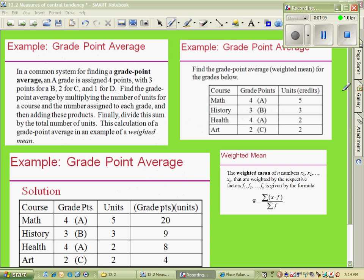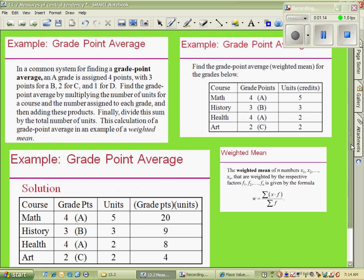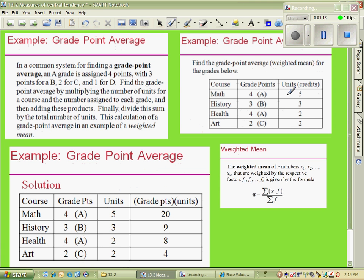They've created a nice table for us. We see here that if you get an A in this particular class, it's 4 points, and that class is a 5-unit class. In the history class, that person earned a B, and that's a 3-unit class. The health class is only 2 units, and the art class is only 2 units. That makes sense, right? When you're in college, your different classes have different weights. They're not all 3 credit hour classes.